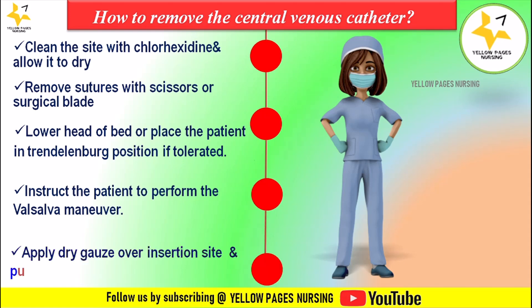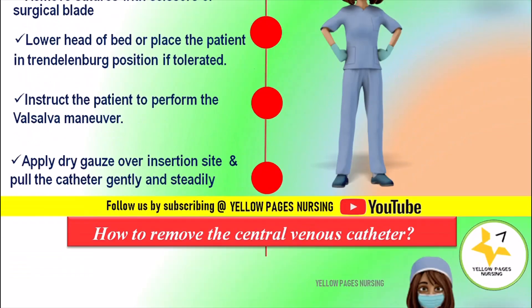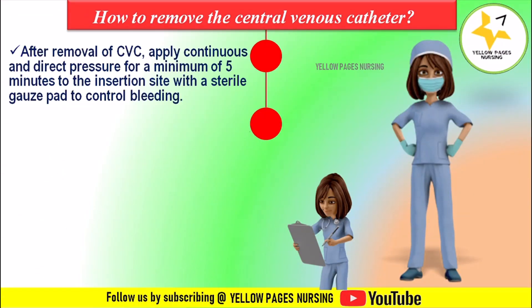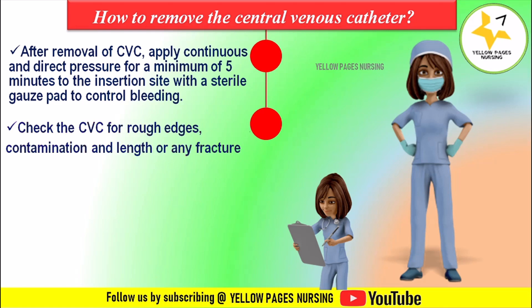Apply dry gauze over the insertion site and pull the catheter gently and steadily, keeping the catheter parallel to the skin. After removal, apply continuous direct pressure for a minimum of five minutes to the insertion site with a sterile gauze pad to control bleeding. Then check the catheter for rough edges, contamination, lint, or any fractures.